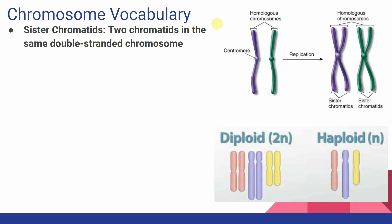The first one of those is the idea of sister chromatids. Sister chromatids are two chromatids in the same double-stranded chromosome. As labeled in our picture here, both of these should be sister chromatids. This purple chromatid here is a sister with this other purple one, and this green chromatid is a sister chromatid with this other green one here.